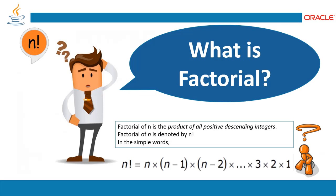Now let's see what factorial actually is. Factorial of n is the product of all positive descending integers, denoted by an exclamation mark. In simple words, the factorial of a positive integer n is the product of all positive integers less than or equal to n.